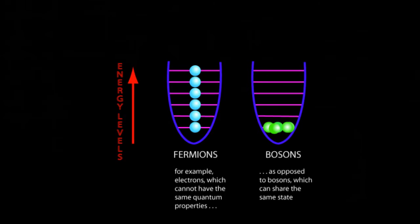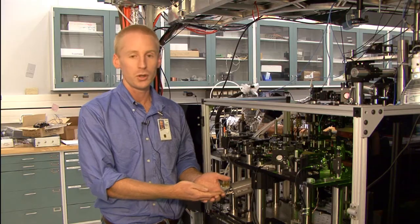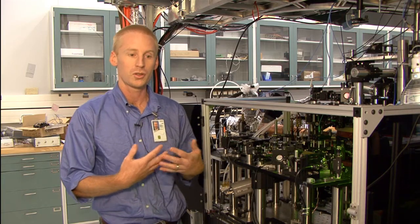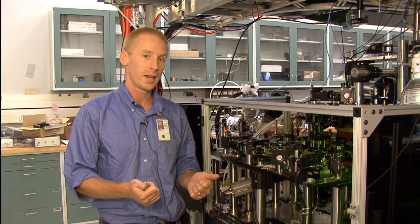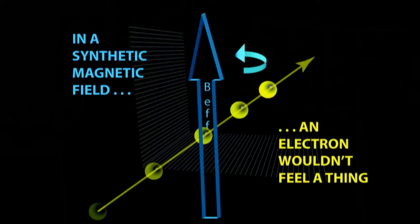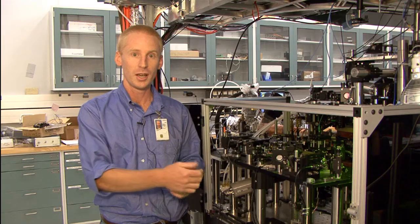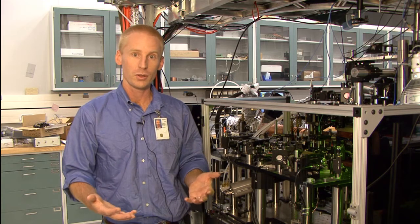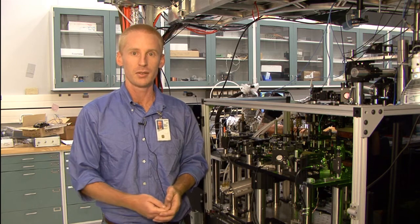We've developed a technique to engineer the Hamiltonian of these atoms—that's what physicists use to describe how they behave—such that they act just as charged particles do in a magnetic field. It's not a real magnetic field; if I put an electron there, it would have no idea this magnetic field is here. It's how we've engineered the behavior to act as if there is a magnetic field. Now you'll hear the story of how that happens.